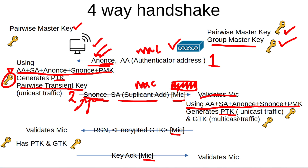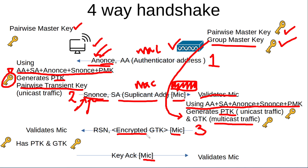The access point will use the group master key in order to generate the group transient key, or GTK, that will be used to encrypt multicast traffic. At the third stage of the four-way handshake, the access point will communicate this GTK to the end device, encrypted and with MIC applied. The end device will validate the MIC, and at this point the end device will have enough information to encrypt unicast traffic using the pairwise transient key and encrypt multicast traffic using the group transient key.